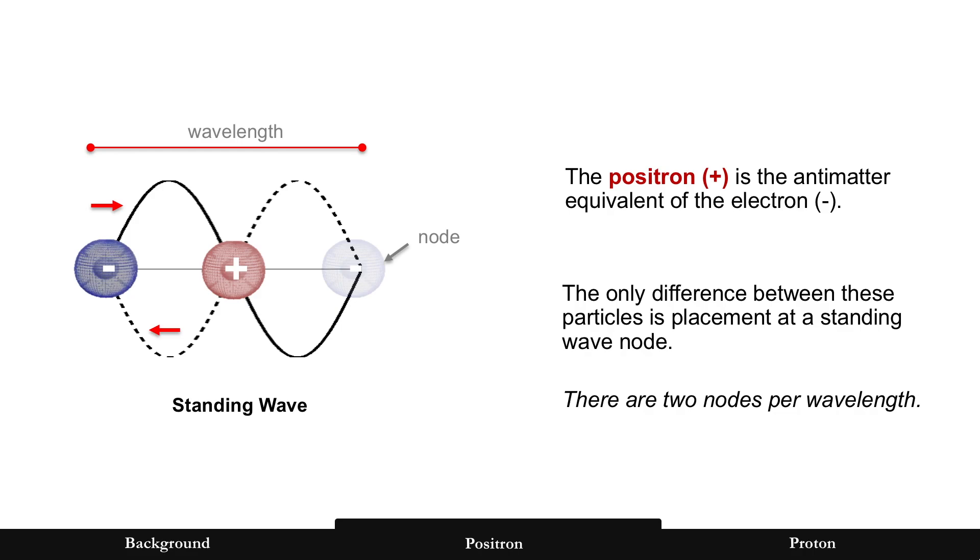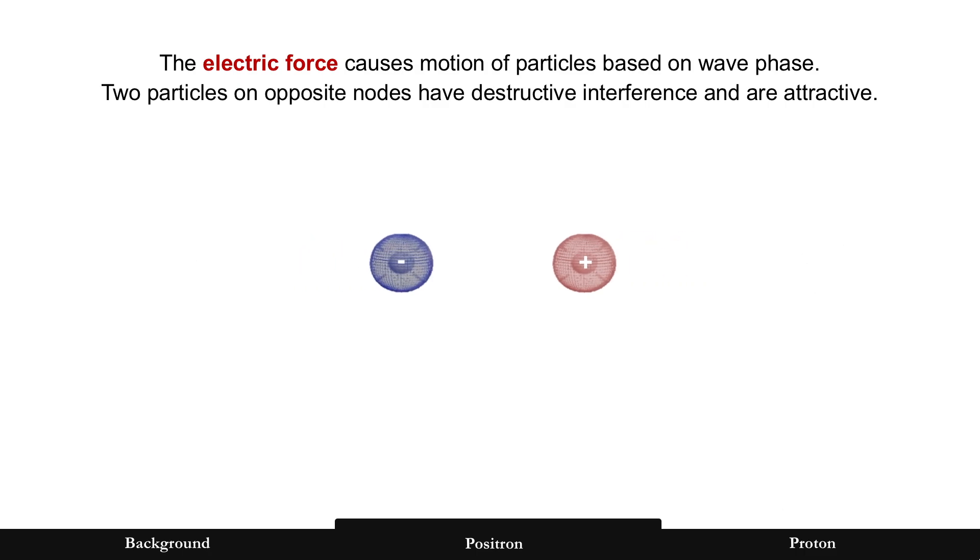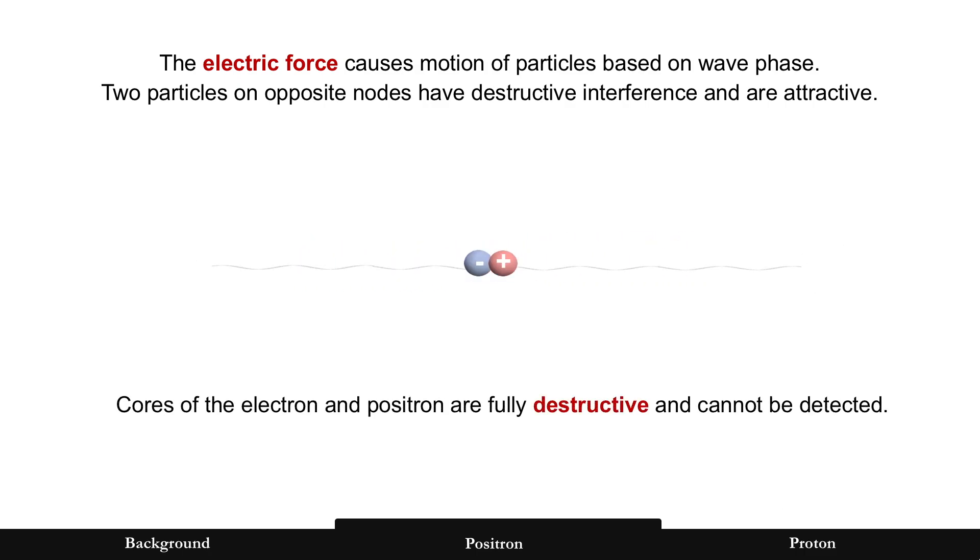And this is why: because two particles at opposite nodes, that's 180 degree phase shift on the wave, is destructive. The same thing happens, for example, in noise cancellation headsets. That's how it works, is destructive wave interference. And so with destructive wave interference between two particles that are placed on opposite nodes, it would be attractive. And the opposite would occur for particles that are on the same node, and it would be constructive and forcing them away.